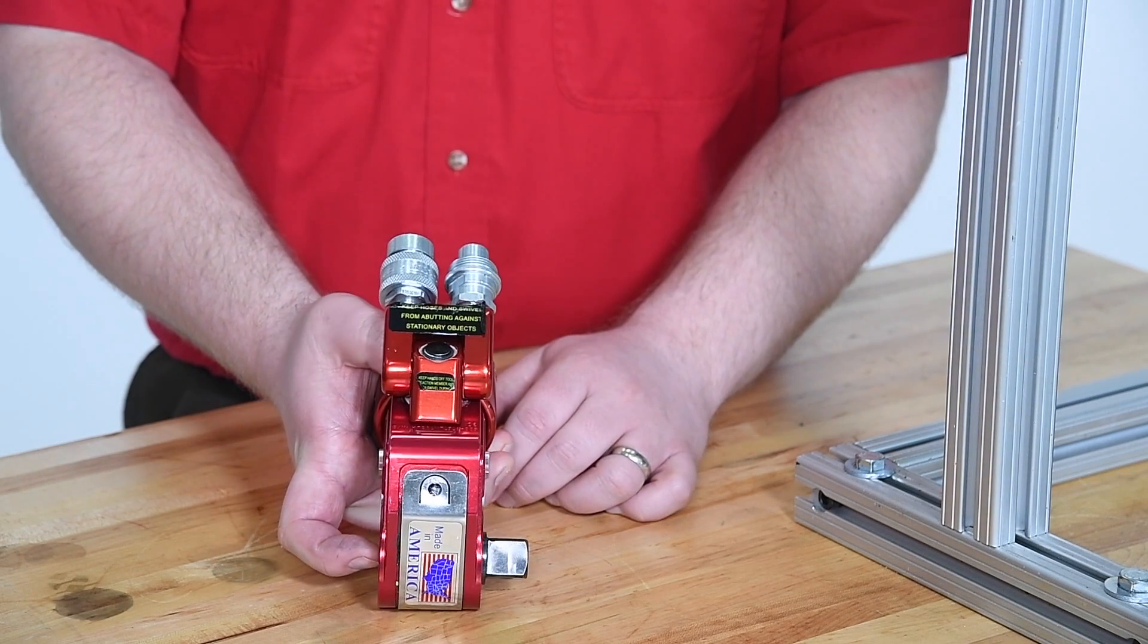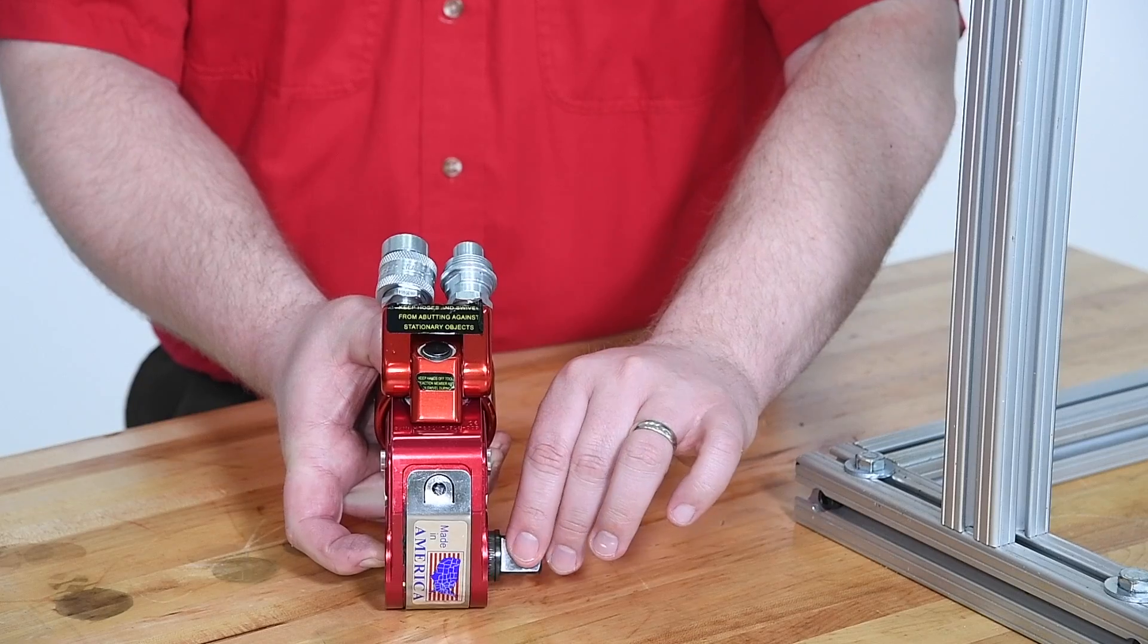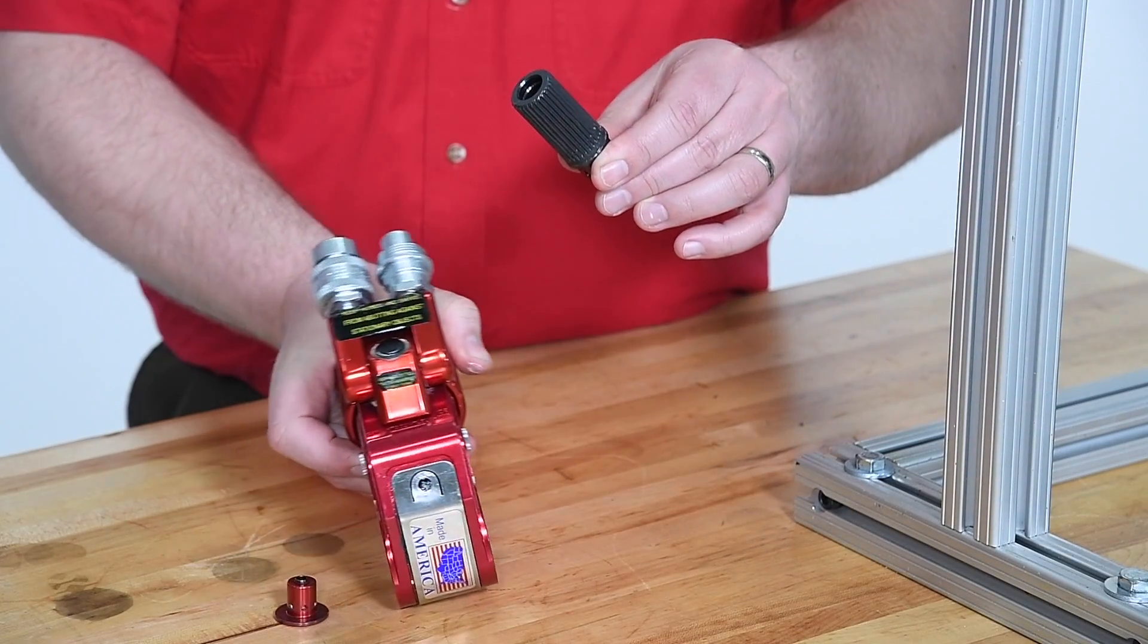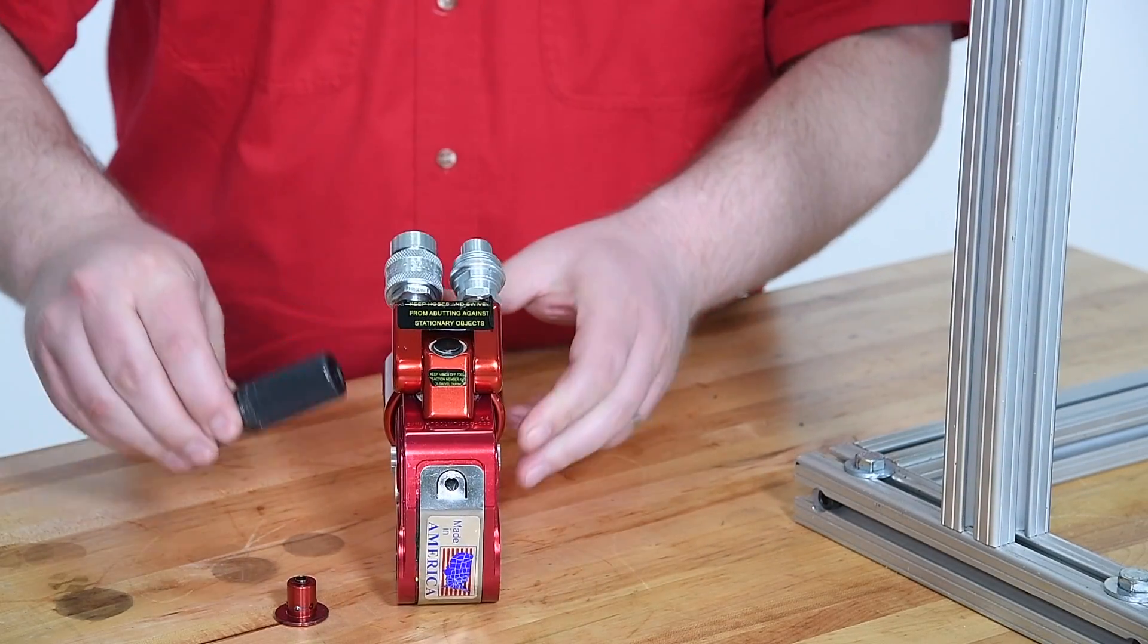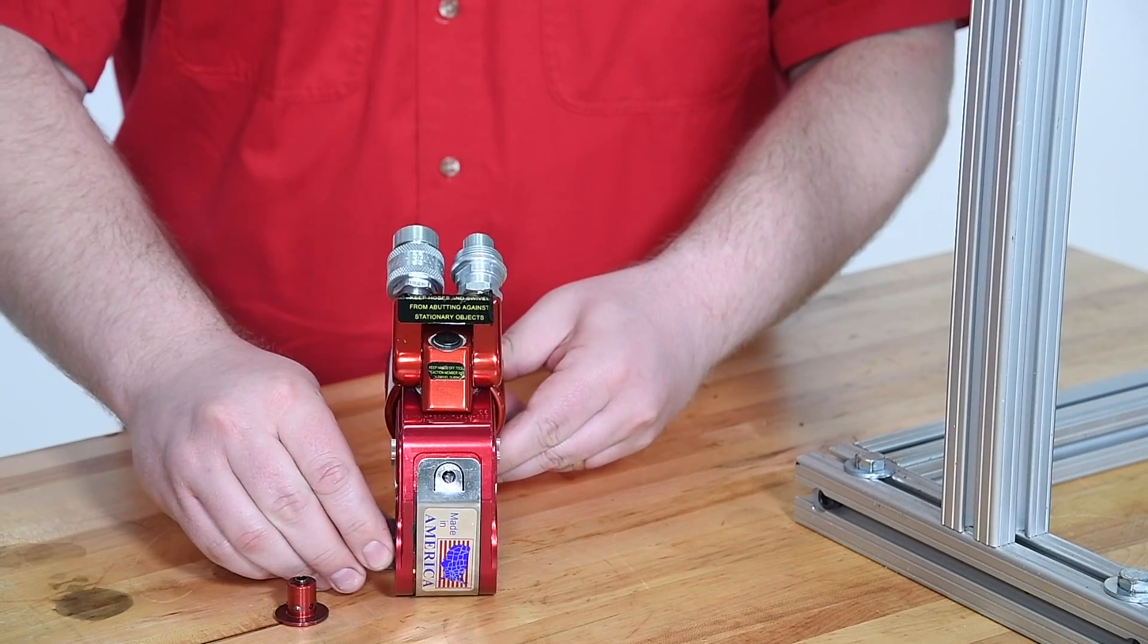Drive direction can easily be changed by depressing the drive retainer button, removing the drive, and replacing it to the opposite side. Then, insert the retainer.